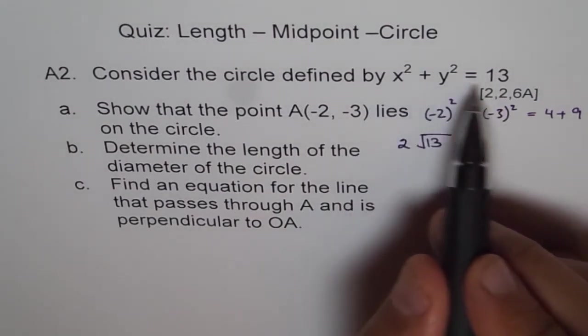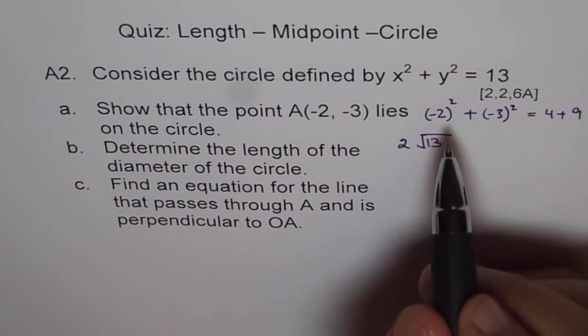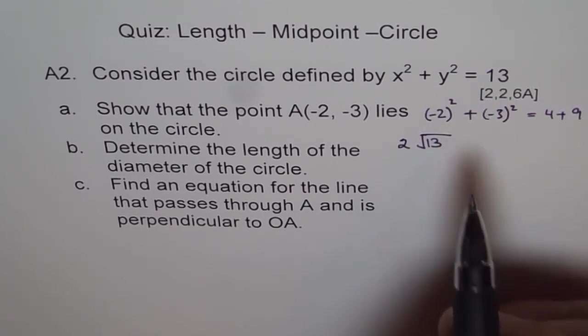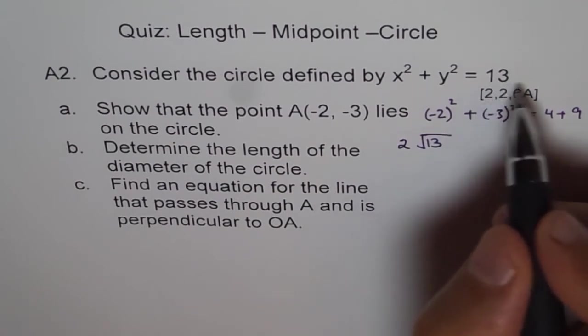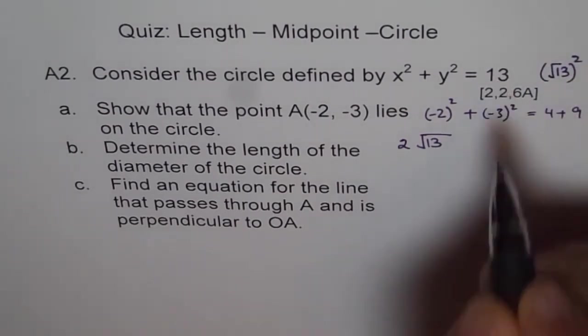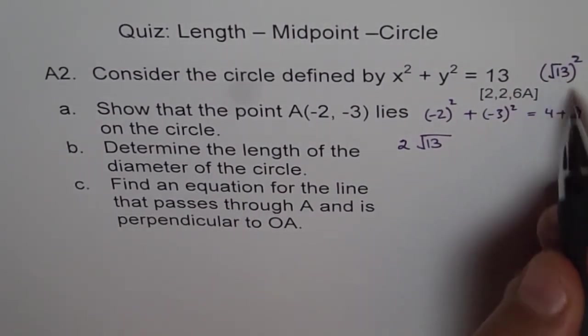The formula is x square plus y square equals to r square. Right? So r is square root value. So it is basically, think like this. It is r square. So it is square root of 13 square, which is written here. Radius is square root of 13.